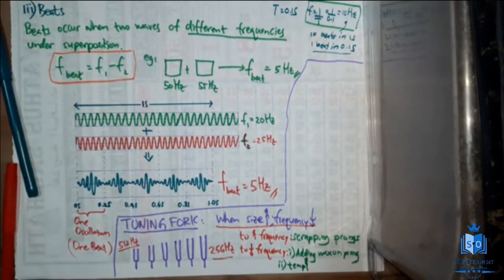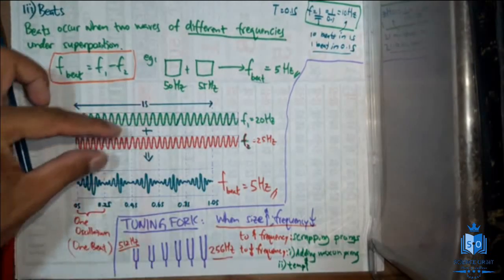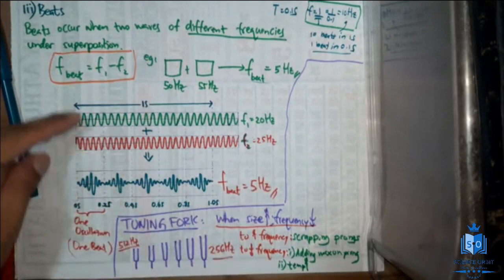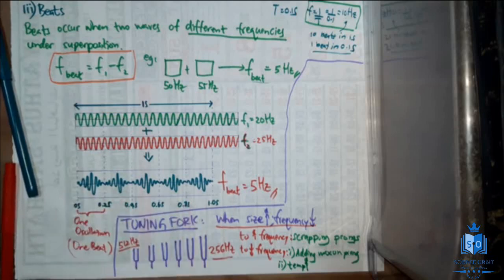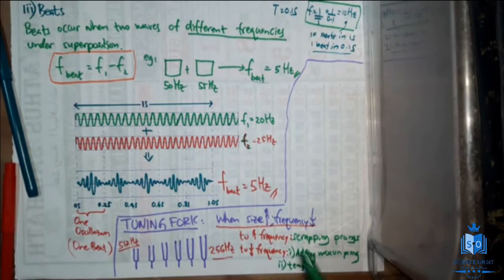Beats are created when 2 waves of different frequencies overlap. The beat frequency — the number of beats per second — equals the difference between the 2 waves. From the example, 25 minus 20 gives a beat frequency of 5. Beats questions often involve tuning forks, which are instruments used to create vibrations. Larger size means smaller frequency, and these values are marked on the tuning fork. We also discussed ways to slightly change tuning fork frequencies.